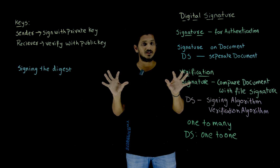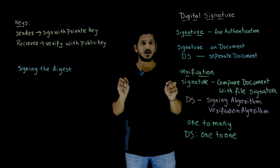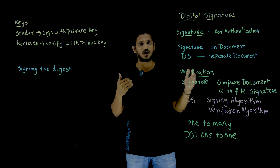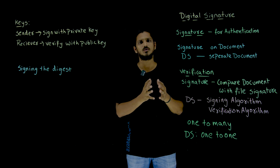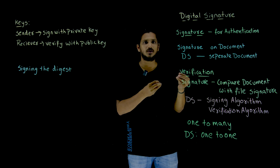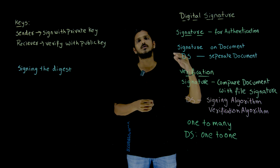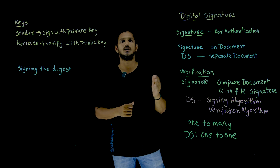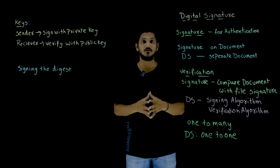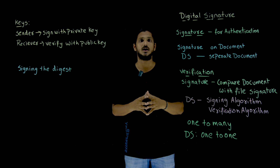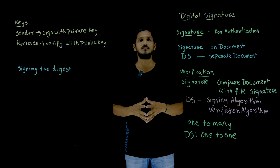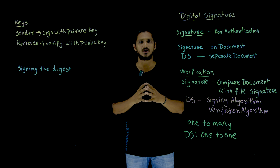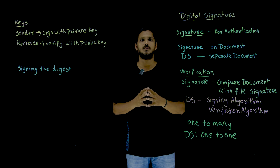These are the basic things you need to understand before we move on to the RSA algorithm on digital signatures. In our next class we are going to understand some basic concepts on digital signatures, and after that we move on to the actual algorithms. Hope you understood this. If you have any questions, please post them in the comment section below. Thanks for watching. If you haven't subscribed to our channel, please subscribe and press the bell icon for the latest updates. Thank you.